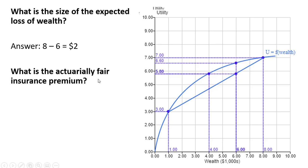What is the actuarially fair insurance premium? It's just going to equal the expected loss of $2, or the probability of the loss times the size of the loss. And as we learned at the beginning, the probability of being sick is 2 sevenths, and the size of the loss is 8 minus 1, or 7. So doing the math here, we get an answer of $2.